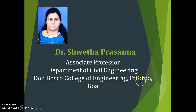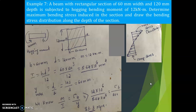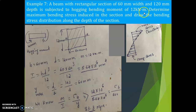Hello, dear students. Let us take one more example on bending stresses. A beam with a rectangular section of 60 mm width and 120 mm depth is subjected to a hogging bending moment of 12 kilonewton meter. Determine the maximum bending stress induced in the section and draw the bending stress distribution along the depth of the section.